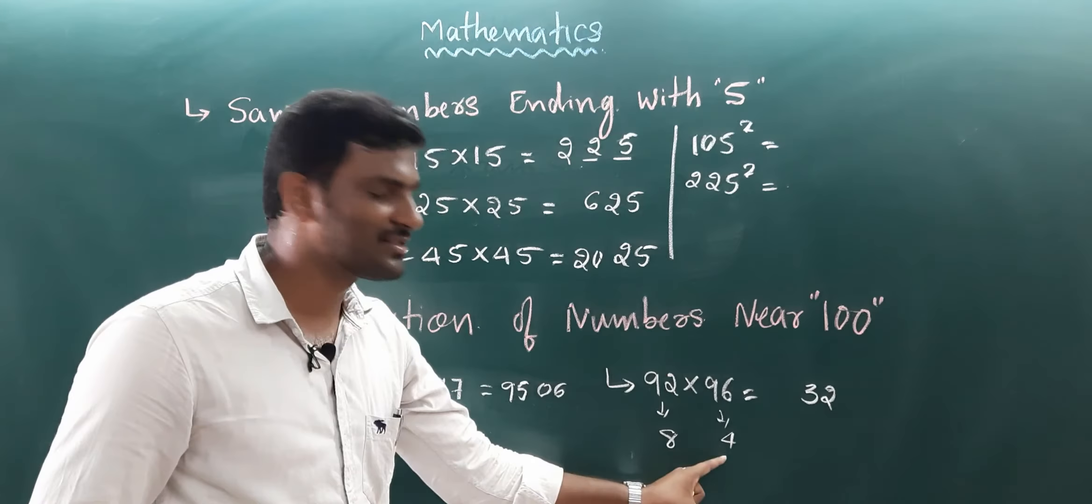So let us take one more question. So that is a 92 into 96. What is a 92 into 96? So you just take the difference. What is the difference between 100 and 96? There is a 4. And this number is 8. So first, we need to multiply 8 into 4. So what is the 8 into 4? It is a 32. The last two digits is 32. And difference 96 minus 8 or 92 minus 4. The both numbers are the same. So that is 88. So this is what I am saying. You just find some more questions. And thank you.